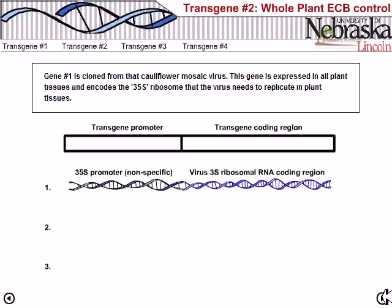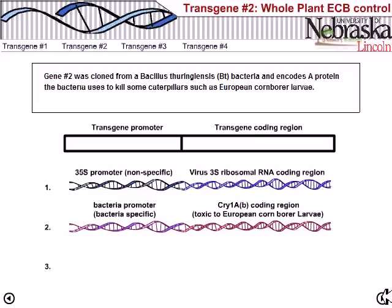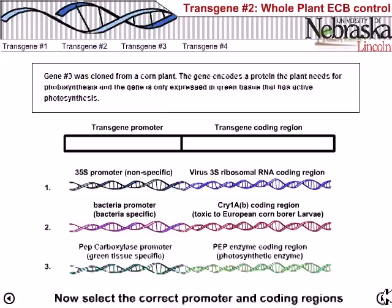Gene one is cloned from the cauliflower mosaic virus, expressed in all tissues, encoding the 35S ribosome that the virus needs to replicate. Gene two was cloned from Bacillus thuringiensis bacteria and encodes the protein used to kill caterpillars such as European corn borer larvae. Gene three was cloned from a corn plant and encodes the protein needed for photosynthesis, expressed only in green tissue with active photosynthesis.